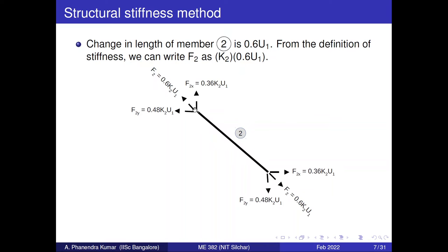Since we are interested in the stiffness matrix in the global coordinate system, we must resolve forces from the local to global coordinates. Using the theta value defined previously, the force in the x direction is 0.36 k2 u1 and in the y direction is 0.48 k2 u1. For the member to be in equilibrium at both nodes, forces must act in opposite directions at each end.